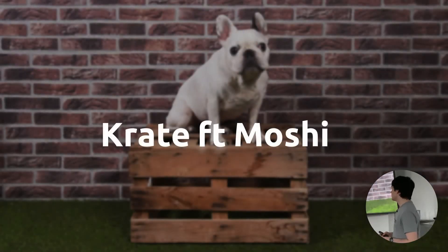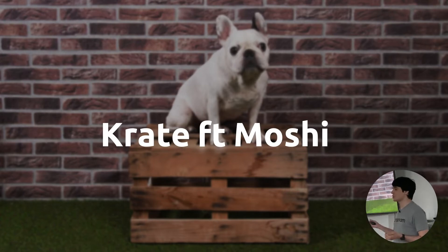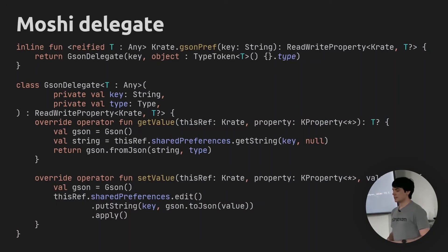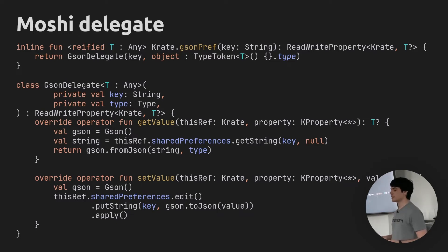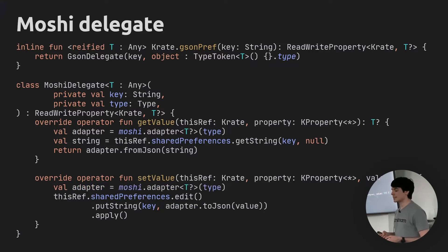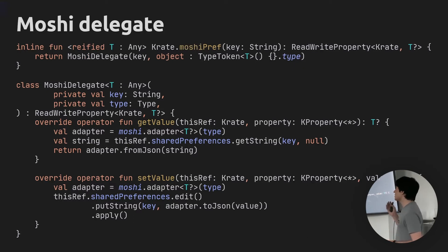This brings us back to the main topic: integrating Crate with Moshi. As time went by, it seemed like a very good idea to add support for Moshi in addition to Gson, since Gson is really not great in Kotlin and you shouldn't use it in a Kotlin-based project, while Moshi behaves much nicer. I took my Gson-based module and copy-pasted it within the project. I renamed the class, changed getValue to grab a Moshi adapter instead of creating a Gson instance, and did the same in setValue. I updated the factory function to be called moshiPref and to use the new MoshiDelegate class.